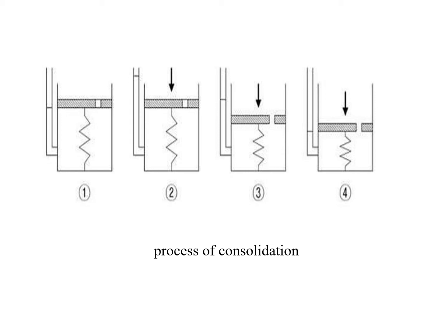Suppose an additional load is applied on the soil-water system to cause an additional stress of delta sigma. If the soil grains have to share this additional load, they have to undergo deformation. As the water filling the soil voids is incompressible, it will not allow the deformation of soil grains. As the soil solids cannot deform, they cannot take any additional stress, and thus the entire additional stress applied is taken by the water filling the voids.